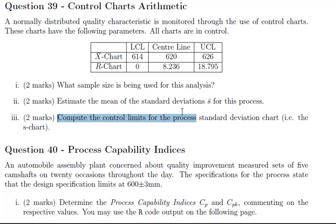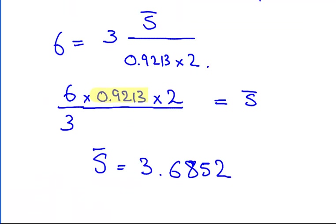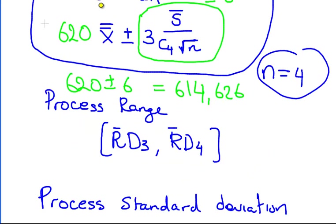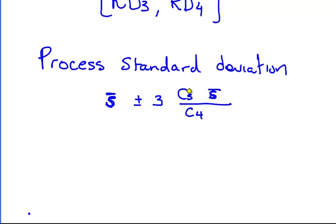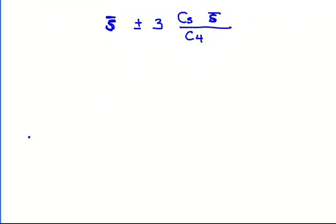Compute the control limits for the process standard deviation chart, the S chart. So we are just going to go back here for a second and have a quick look at those. So it is S bar plus or minus 3 times C5 times S bar over C4.